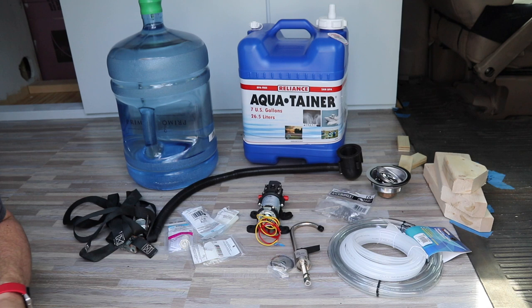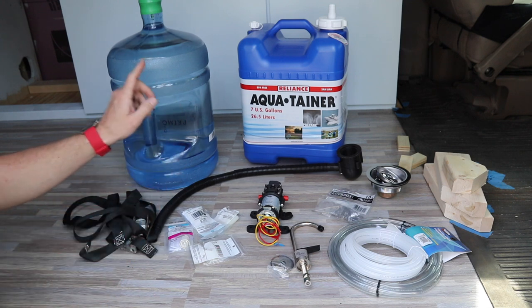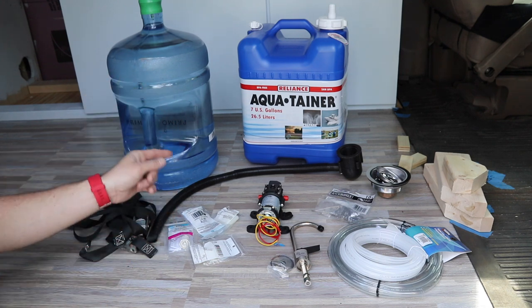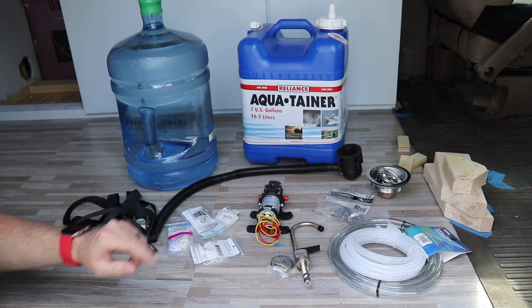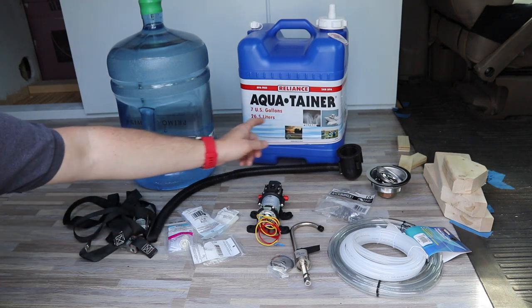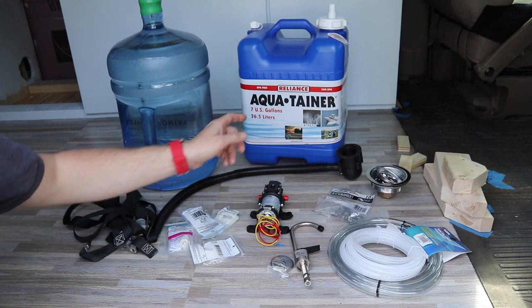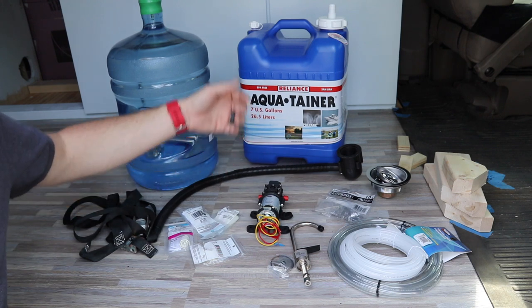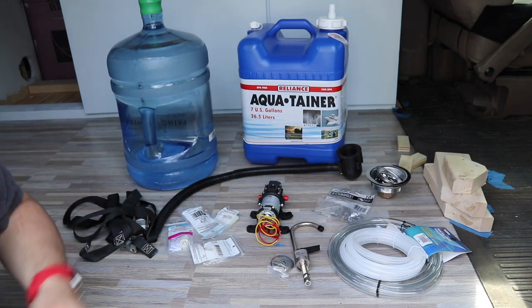Just to go over some of the components here, we have our potable water tank, which is just a traditional office water jug, and a square container, seven gallons, to use as our gray water tank, which we can remove and take out to dump.